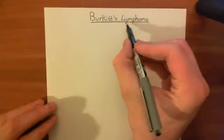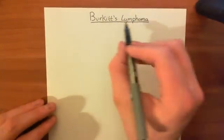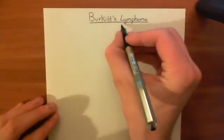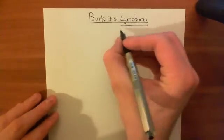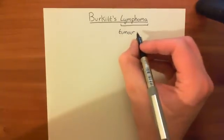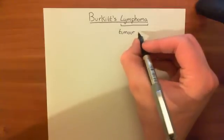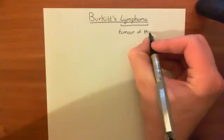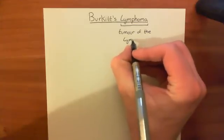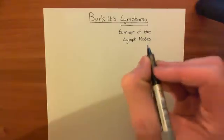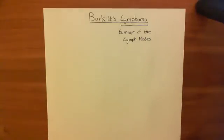So what is a lymphoma? Burkitt is just some physician who first described this condition. A lymphoma is basically a tumour of the lymph nodes, and in lymphoma the lymph nodes grow to massive sizes. In Burkitt's lymphoma specifically, it is a tumour of B-cells — B-cells which are sitting within the B-cell follicles within lymph nodes.